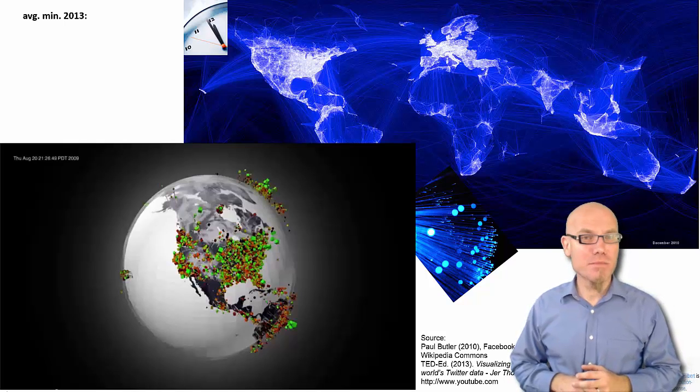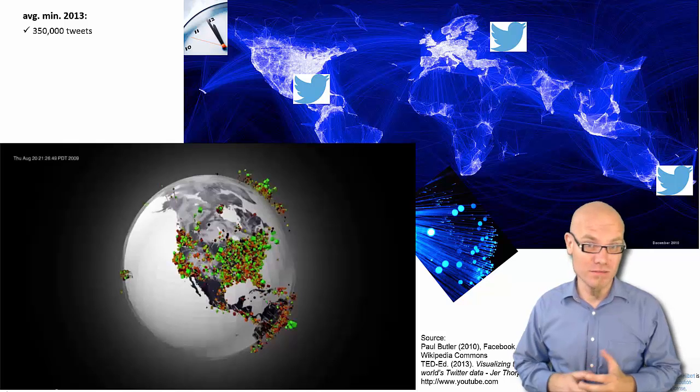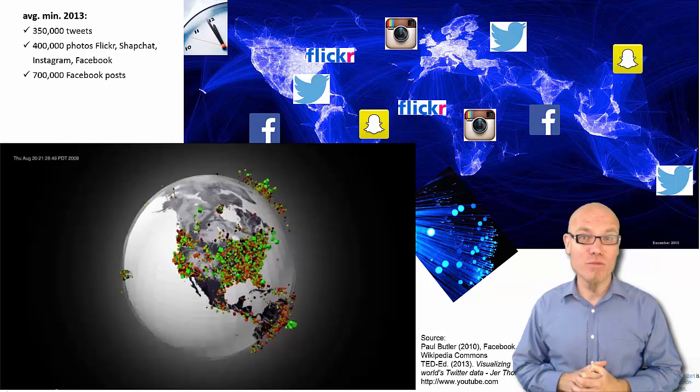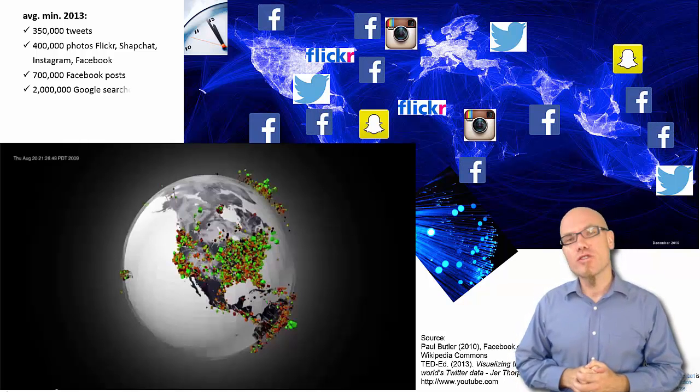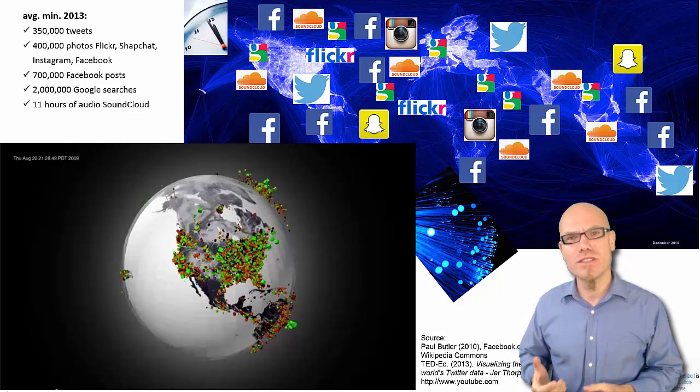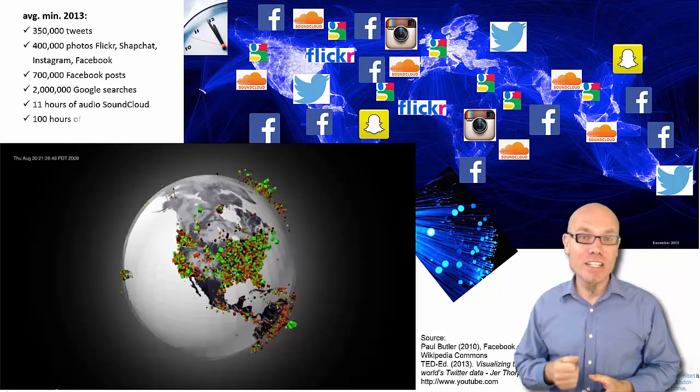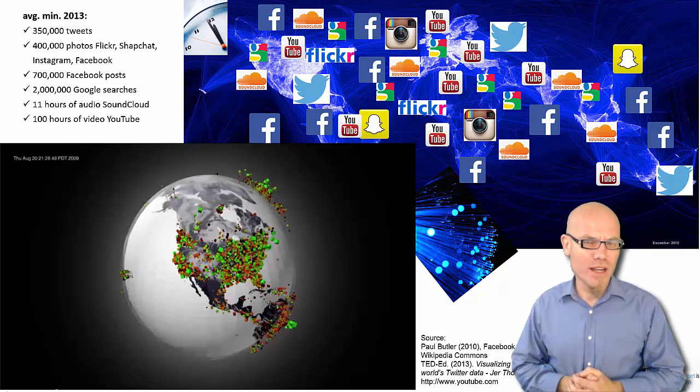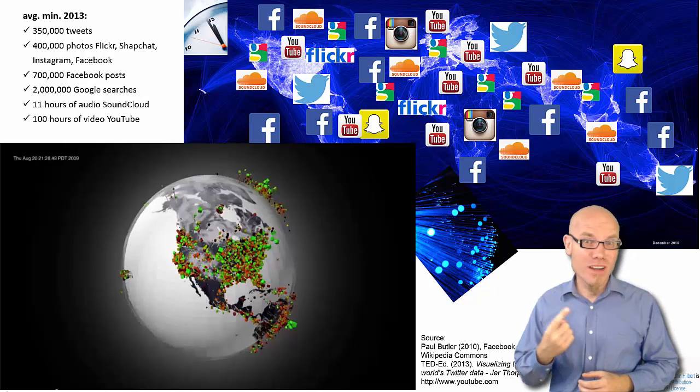In an average minute, cyberspace produces about 350,000 microblog news in the forms of Twitter tweets, 400,000 pictures, 700,000 posts on one social network like Facebook, 2 million Google searches each minute, 11 hours of music are uploaded only on one platform SoundCloud, and each minute 100 hours of video are uploaded on a video platform like YouTube.